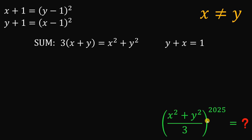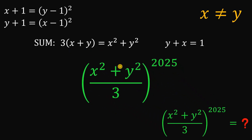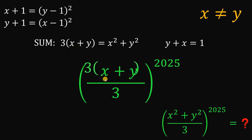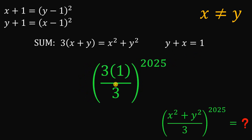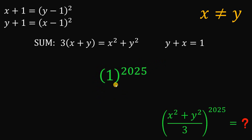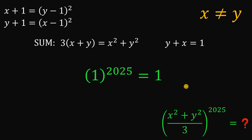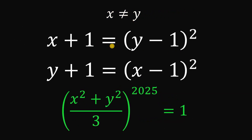From here, we can now evaluate the expression. We know x squared plus y squared equals 3 times x plus y, and x plus y equals 1. So x squared plus y squared equals 3 times 1, which is 3. Then 3 divided by 3 is 1, and 1 raised to the power of 2025 is simply 1. Therefore, given the two equations with x not equal to y, the numerical value of x squared plus y squared over 3 raised to the power of 2025 is 1. And as always, we are done.